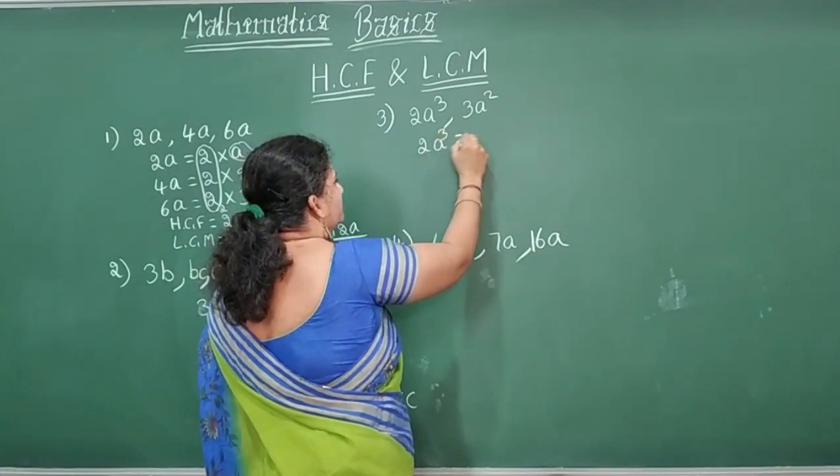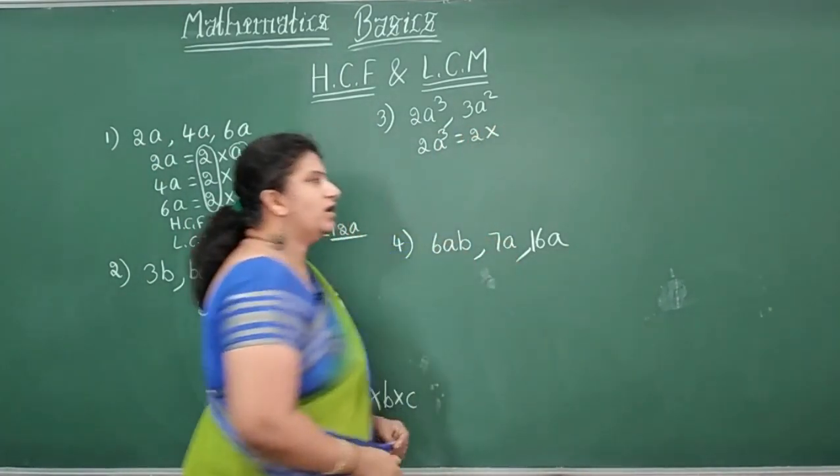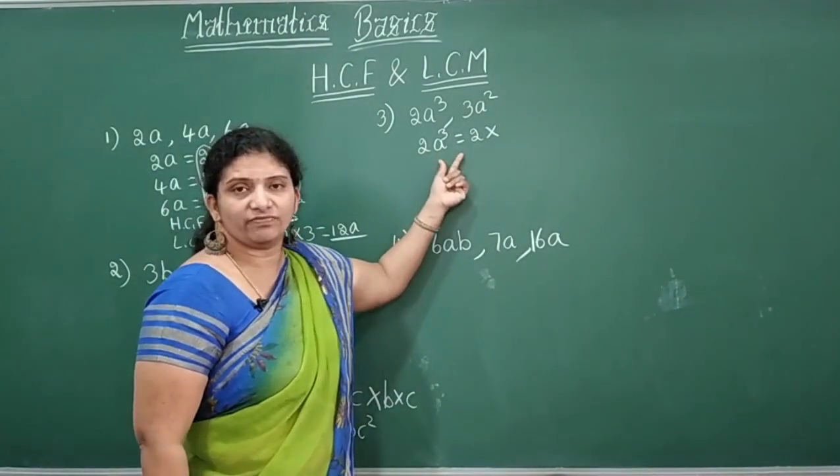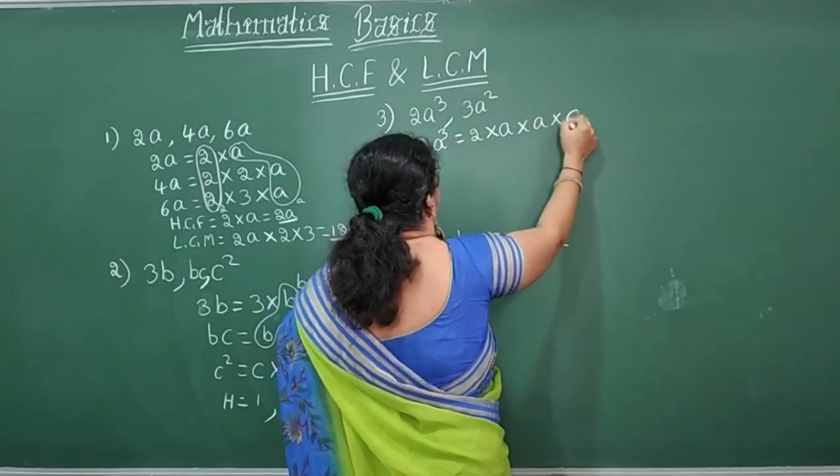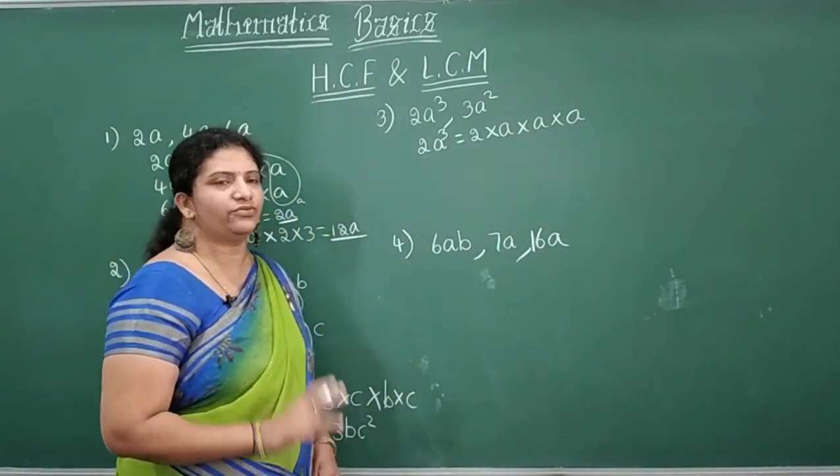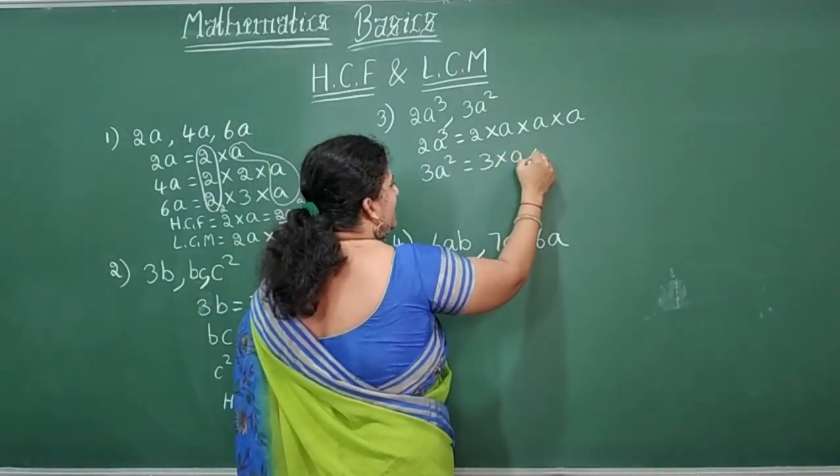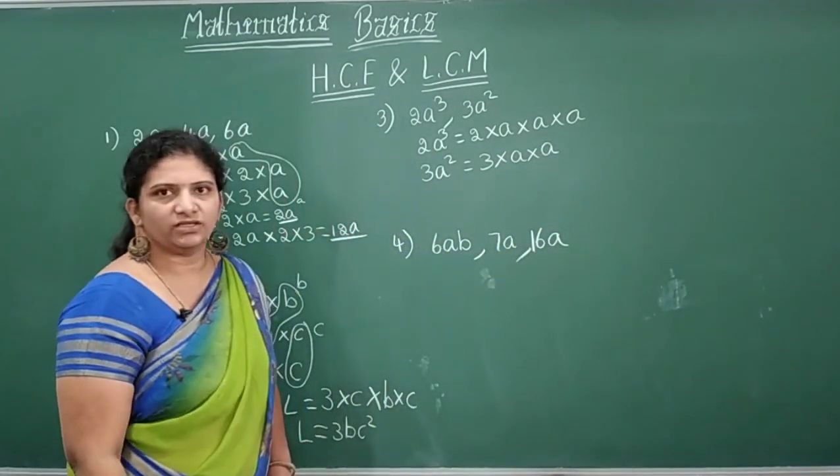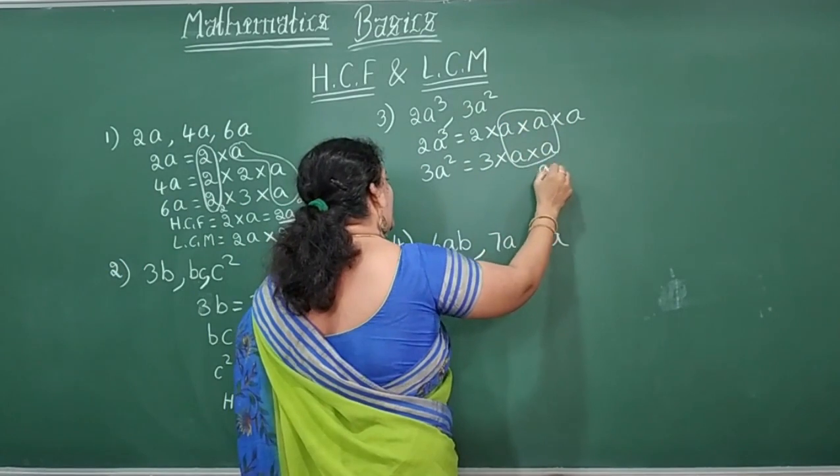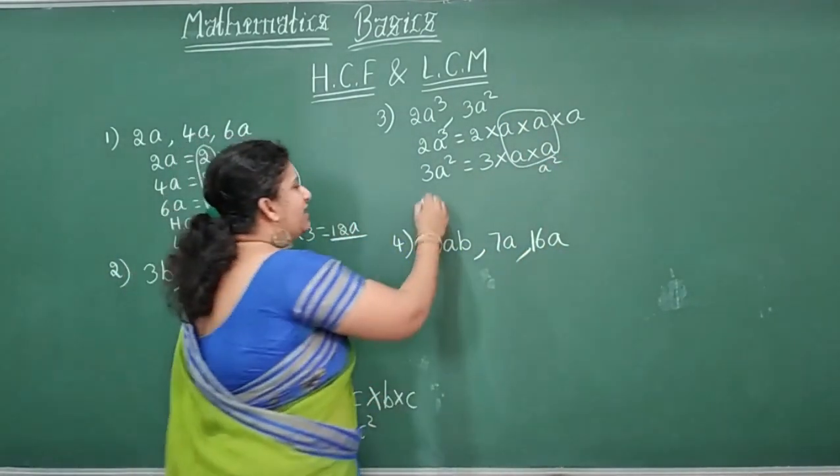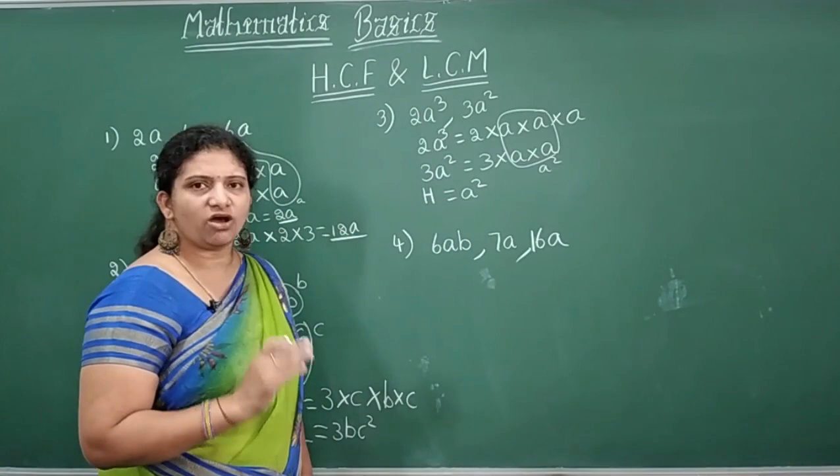2A cube. Split this number, number and variables. 2 into, so here, when we call here children, algebraic coefficient, numerical coefficient we call. So this, A cube can be written as A into A into A. See here A cube, A is multiplied 3 times. Now next one, 3A square. 3 into A square means A is multiplied 2 times. So now in these two anything common children? Yes. 2 A's are common. And A into A I will write it as A square. HCF of 2A cube 3A square is equal to A square. Which is common? You have written here.